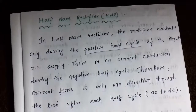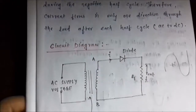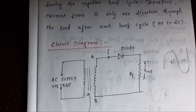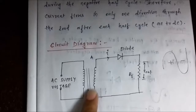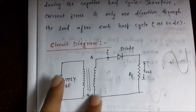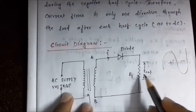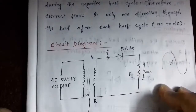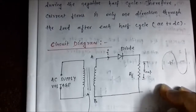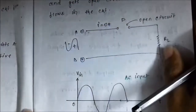Now let us see the circuit diagram of a basic half wave rectifying circuit. The components used in this circuit are: a transformer, which can be step-up or step-down as per the requirements of the circuit; an AC supply voltage source; a semiconductor diode; and a load resistance RL, across which the output voltage appears.